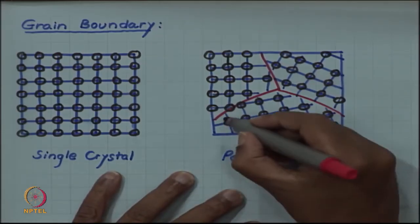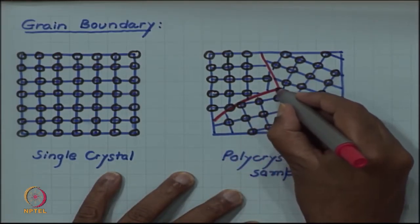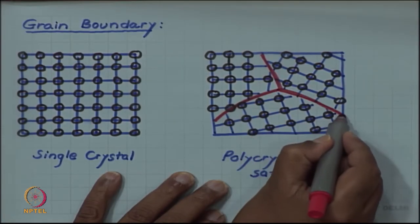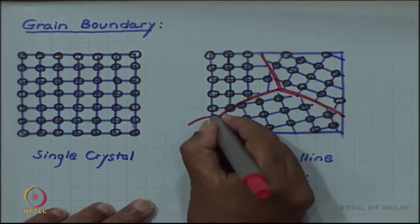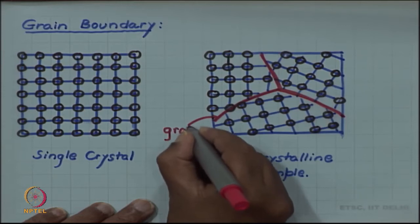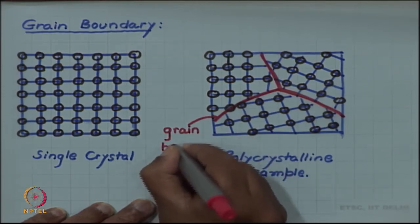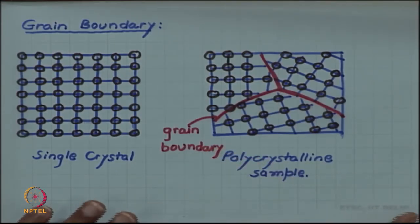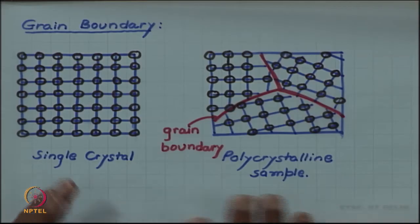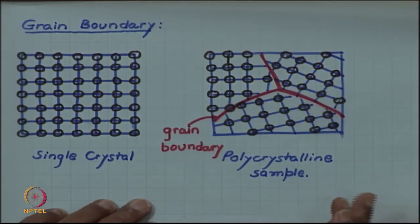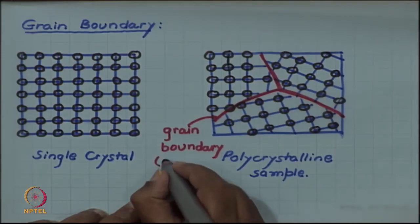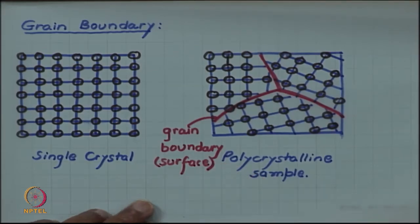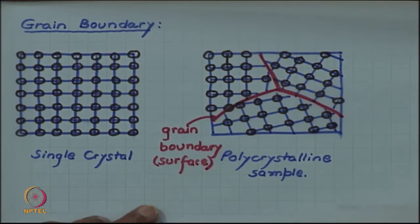The lines which I have drawn across which the orientation changes are called the grain boundaries. In 2D it is a line, but you can imagine that in three dimensions, if you want to separate regions with different orientations, you will need surfaces. So a grain boundary is a surface — it need not be a flat surface, it may be a curved surface, but it will be a surface in 3D. In a two-dimensional picture like this I have shown it as lines.